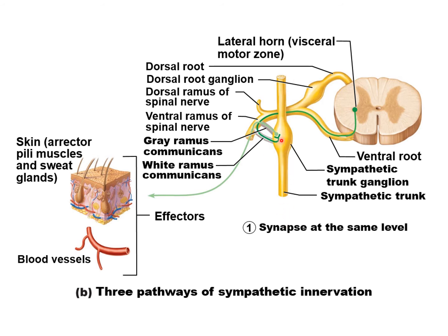So what can happen? Number one of our possibilities: it synapses right here. You can see the synapse — we go from dark green to light green. After the synapse, we have our post-ganglionic neuron in light green that leaves the sympathetic chain through the gray ramus and out to the effectors. Since this is the autonomic nervous system, the effectors can be smooth muscle, skeletal muscle, or glands. Possibility one: it synapses in the sympathetic chain at the same level that it entered.